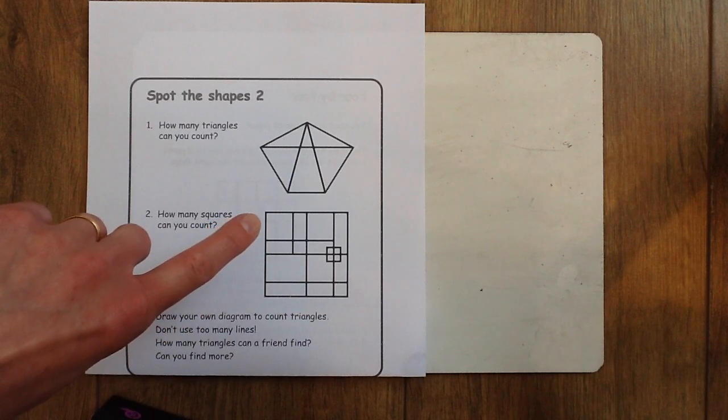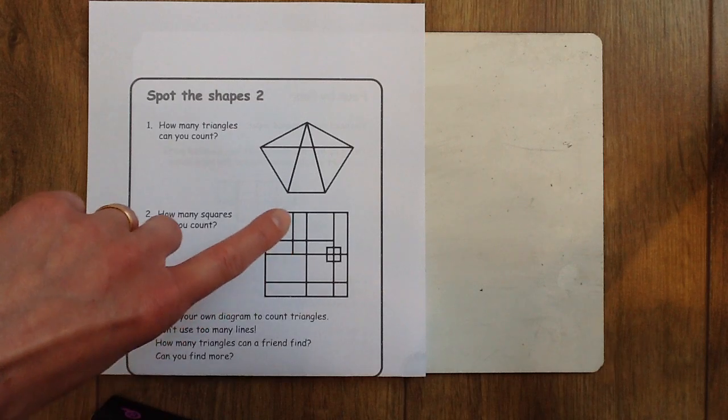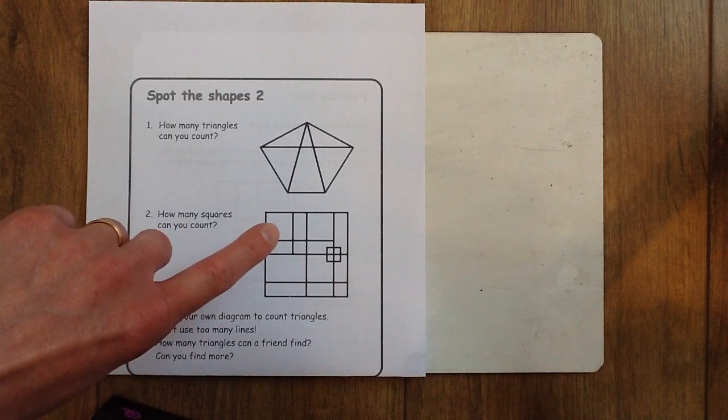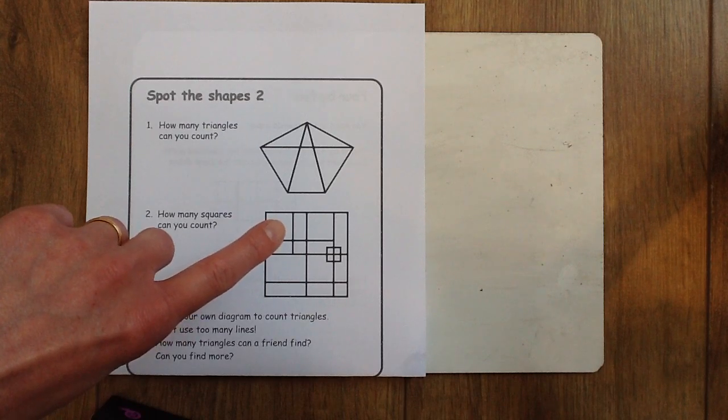So a property of a square is that each of the sides is equal in length. So this is one square. How many can you find?